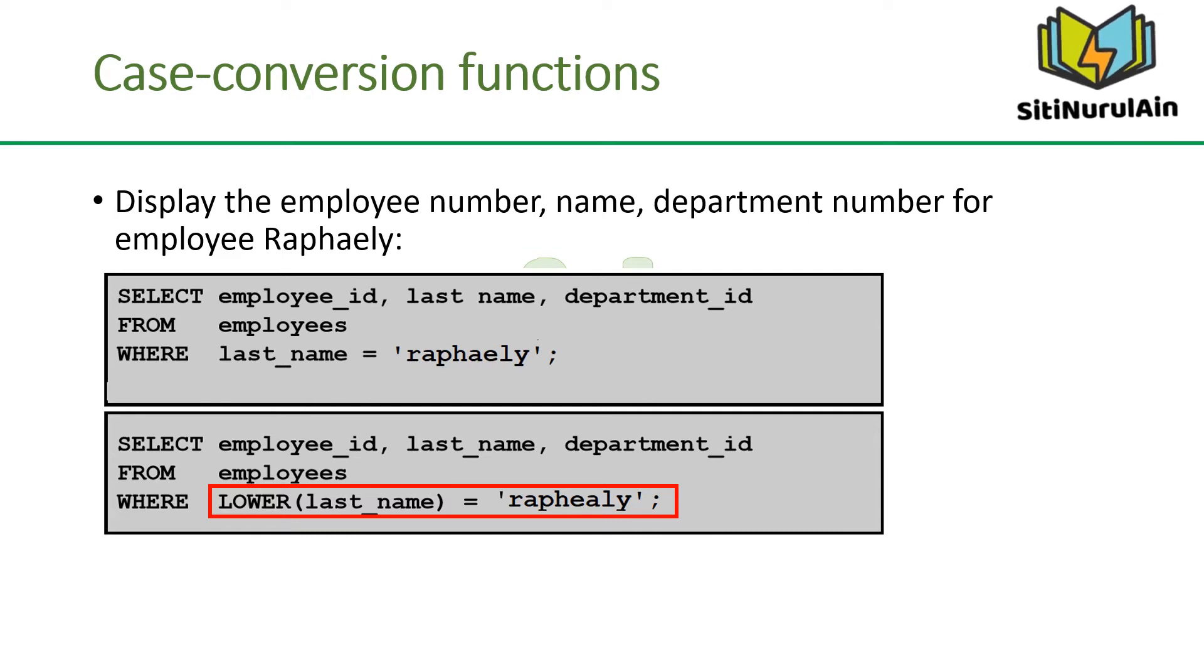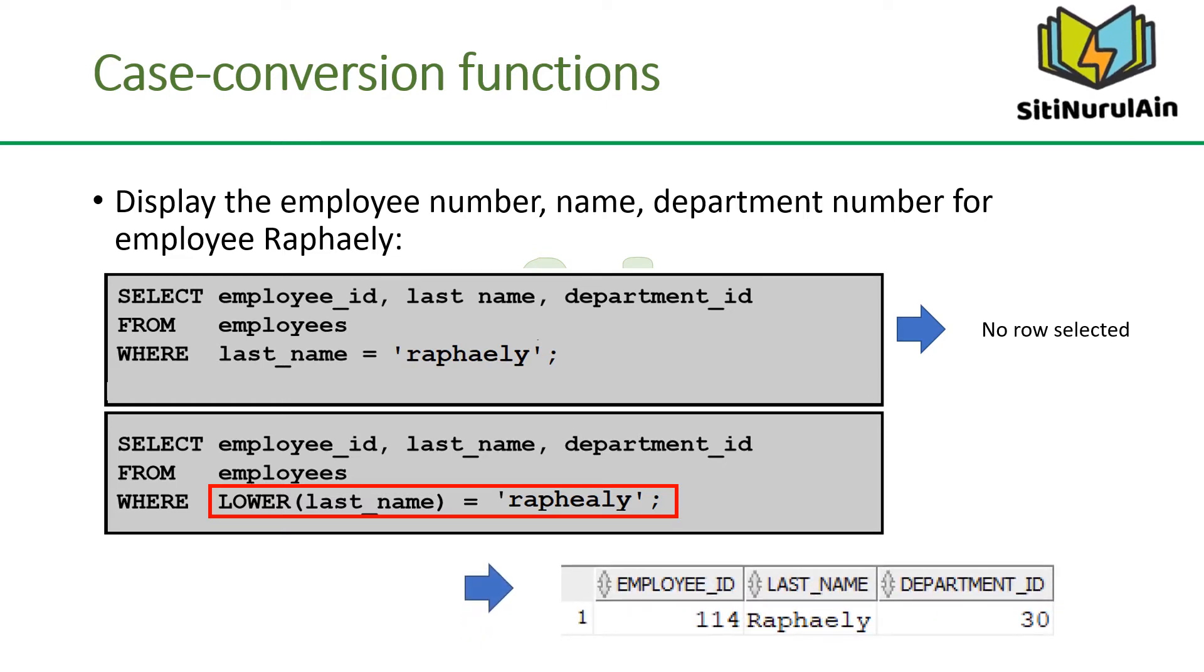The slide example displays the employee number, name, and department number of employee Raphaely. The WHERE clause of the first SQL statement specifies the employee name as Raphaely. Because all the data in the employees table is stored in proper case, the name Raphaely does not find a match in the table, and no rows are selected. The WHERE clause of the second SQL statement converts the last_name column to lowercase for comparison purposes. Because both names are now lowercase, a match is found and one row is selected.